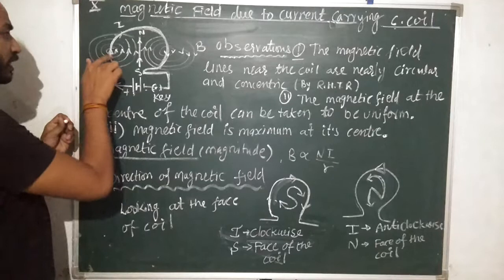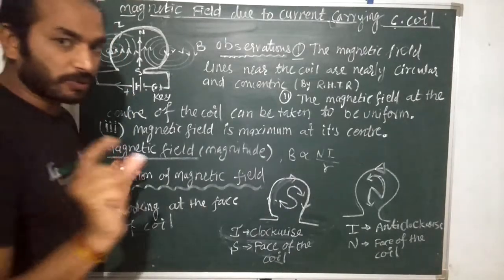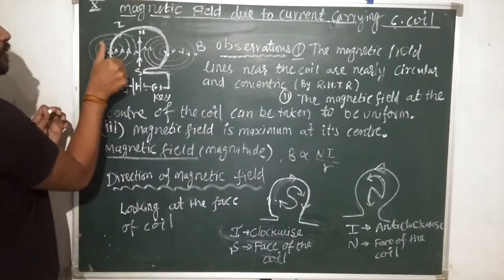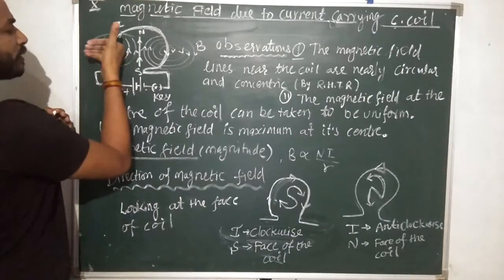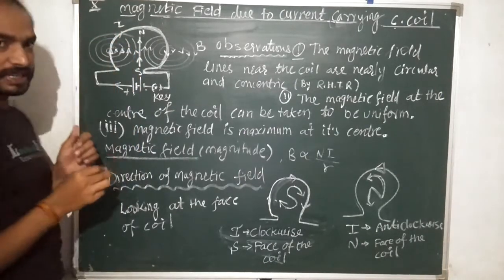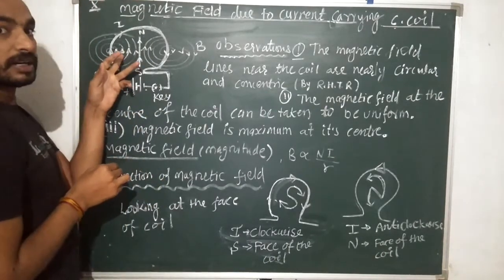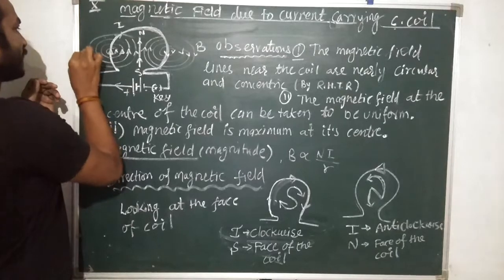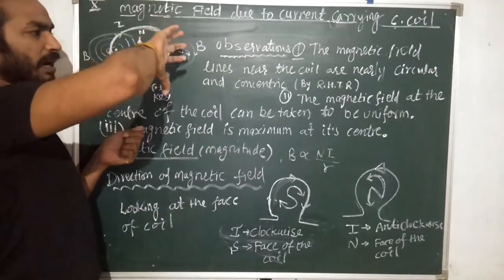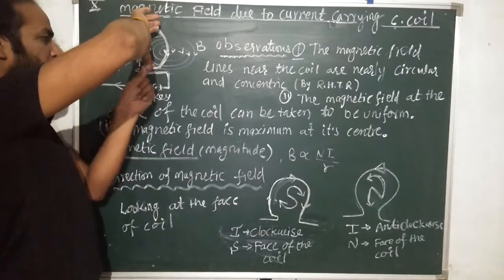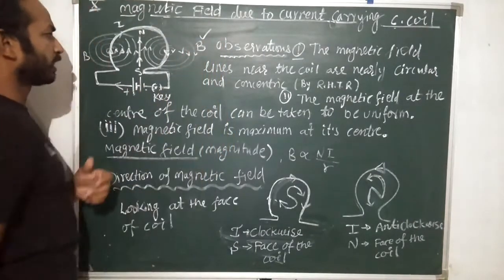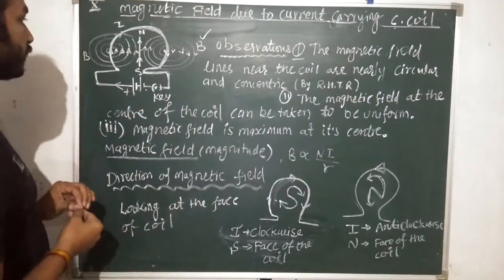Let me consider this small part of the circular coil. It will behave like a straight conductor, so I will use the right-hand thumb rule. All fingers will give the direction of the magnetic field. The direction is anticlockwise — these are the magnetic field directions. The direction of current is shown by the thumb.